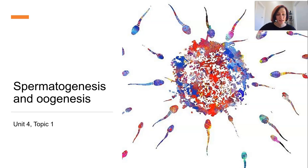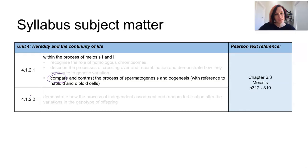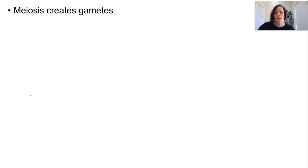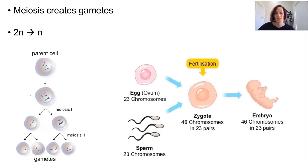In this lesson we are looking at spermatogenesis and oogenesis, still in the context of meiosis. We need to compare these processes, so we need to understand them first. Meiosis creates gametes, which are sex cells designed for fertilization, because they have half the number of chromosomes of a normal somatic cell. In humans, that means 23 instead of 46 chromosomes.